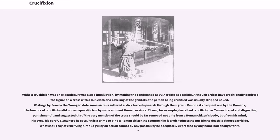While a crucifixion was an execution, it was also a humiliation, by making the condemned as vulnerable as possible. Although artists have traditionally depicted figures on a cross with a loincloth or covering of the genitals, the person being crucified was usually stripped naked. Writings by Seneca the Younger state some victims suffered a stick forced upwards through their groin.